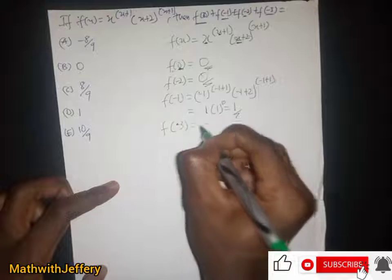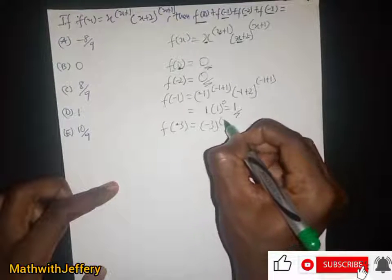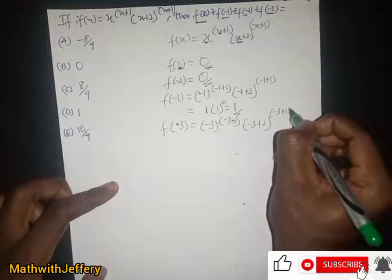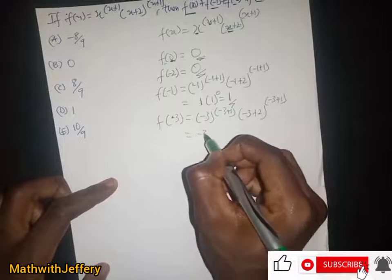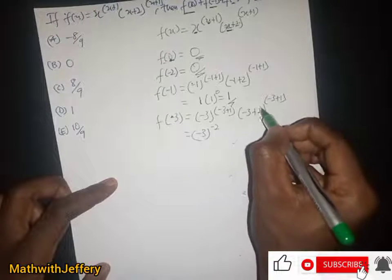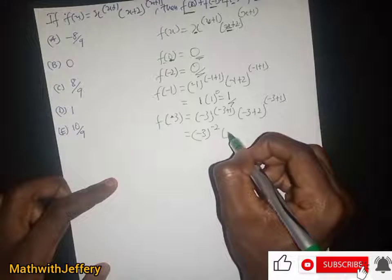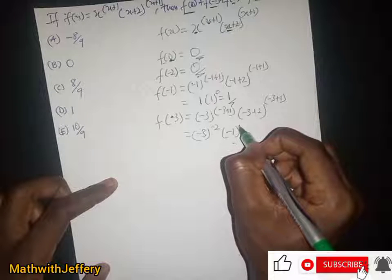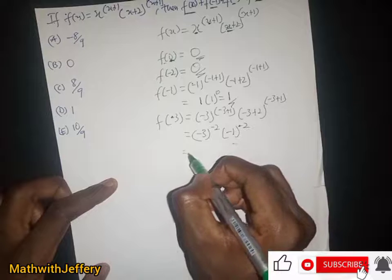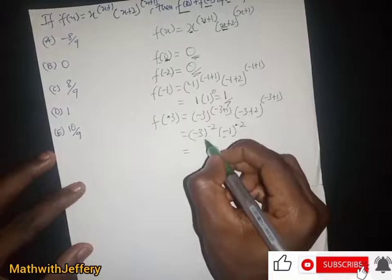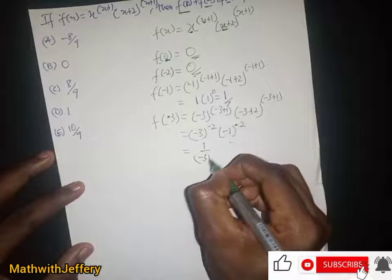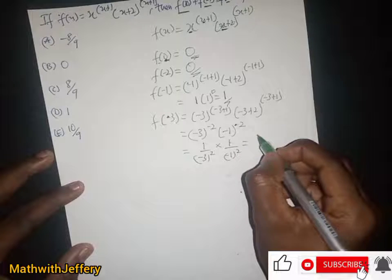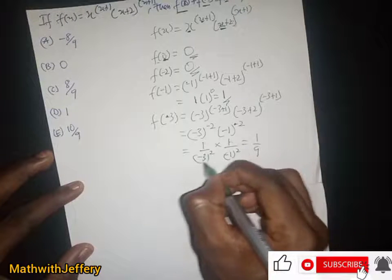Now f(-3): we have negative 3 to the power (-3+1), which is negative 3 to the power -2. Then (-3+2) to the power (-3+1), which is negative 1 to the power -2. We can write this as 1 over (-3)² multiplied by 1 over (-1)², giving us 1/9 × 1 = 1/9. So f(-3) = 1/9.